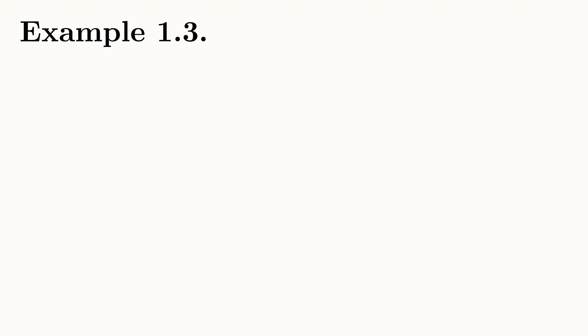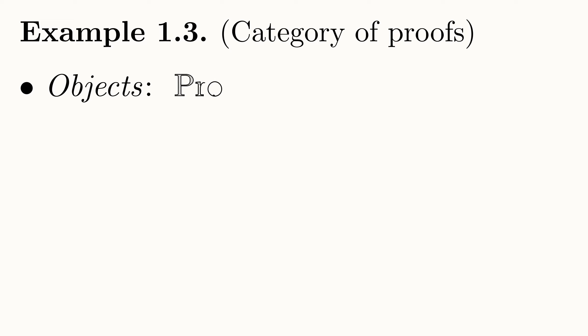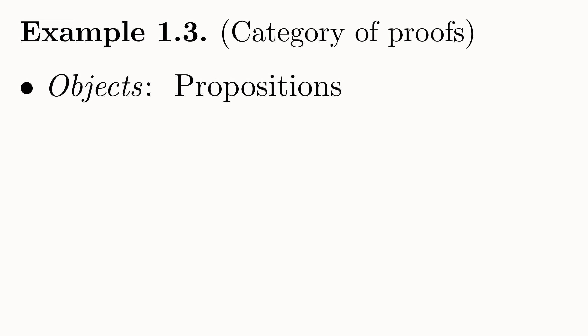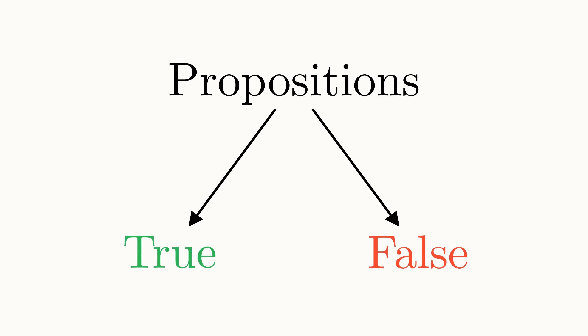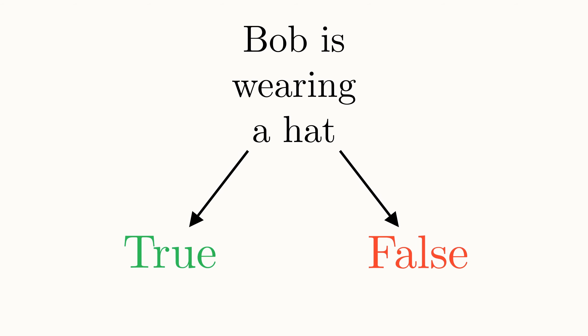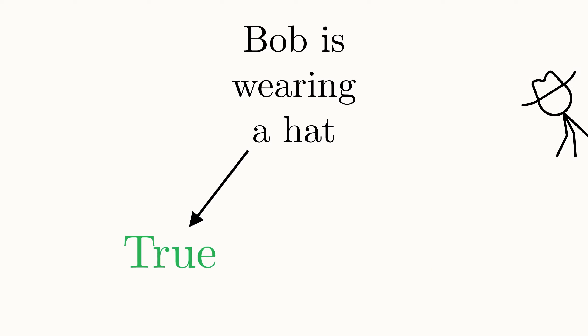Next up, let's look at a really interesting category. Let's look at the category of proofs. The objects in our category are going to be propositions. A proposition here means some statement which can be true or false. As an example, we could have the proposition Bob is wearing a hat. Considering that Bob is indeed wearing a hat, this proposition is true.